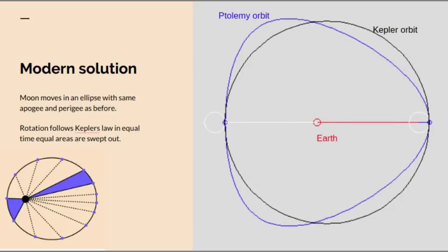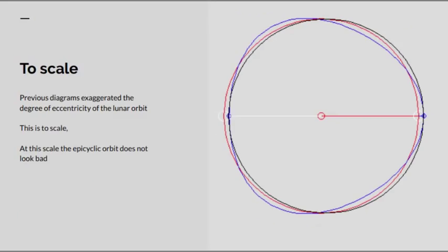Now, the diagrams I've drawn exaggerate the eccentricity by about three times. This is a more realistic diagram, a to-scale diagram of the eccentricity of the orbits. And you can see that the black ellipse is only slightly off the red circle. And the Ptolemaic epicycle orbit is again only slightly off.